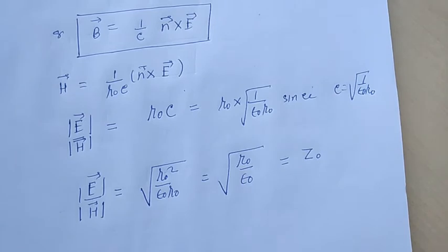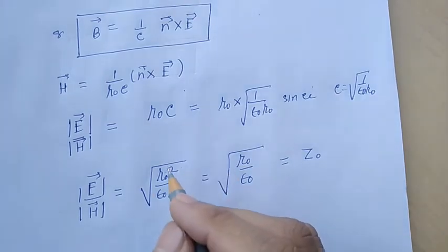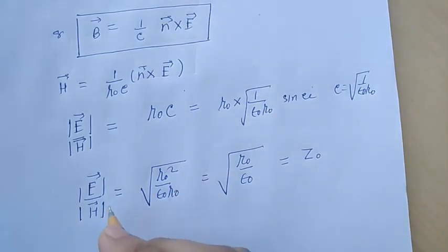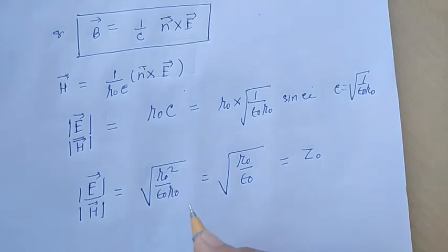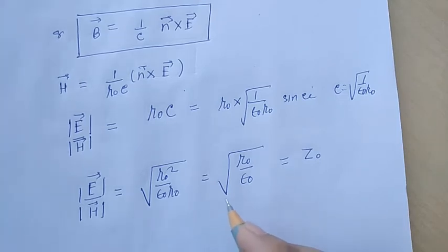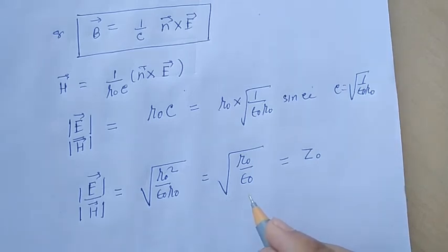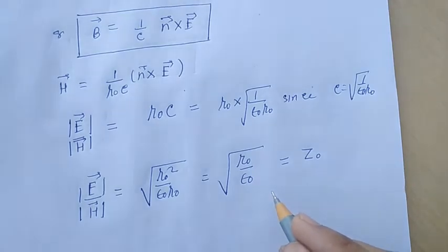As the ratio E/H is real and positive, the vectors E and H are in phase — that is, when E has its maximum value, H also has its maximum value. Also, it is clear that in an electromagnetic wave, the amplitude of the electric vector E is Z₀ times that of the magnetic vector H.